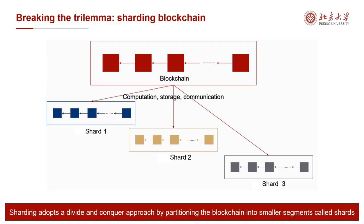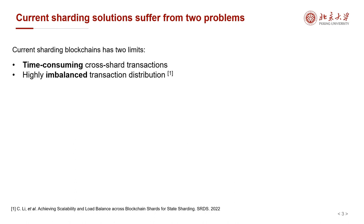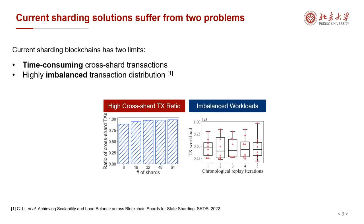Sharding adopts a divide-and-conquer approach by partitioning the blockchain into smaller segments called shards. Each shard stores a portion of the blockchain's state and can process transactions independently and concurrently, thereby enhancing the performance of the blockchain. However, current sharding solutions suffer from time-consuming cross-shard transactions, and the transaction distribution among shards is highly imbalanced. As seen in the left figure, the ratio of cross-shard transactions is over 90% when there are more than 16 subchains, and the right figure shows that the workload is highly imbalanced.